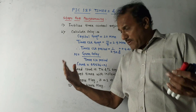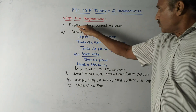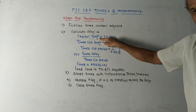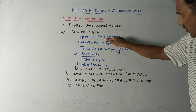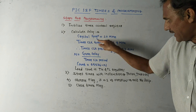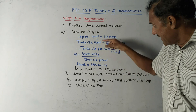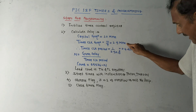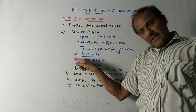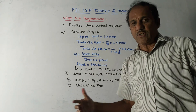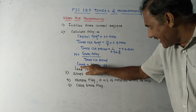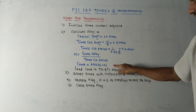Now let us talk about programming. These are the steps while writing a program using timers - from the exam point of view you may expect a separate question asking what are the steps for programming using timers. First step: initialize the timer control register as already discussed. Second: calculate the delay. If crystal frequency is not given, by default assume 10 MHz. Calculate timer clock frequency: 10 divided by 4 equals 2.5 MHz. Calculate timer clock period: reciprocal of frequency, so 1 / (2.5 × 10⁶) = 0.4 microseconds. Then calculate N using the formula: given delay divided by timer clock period.